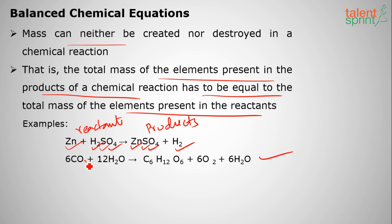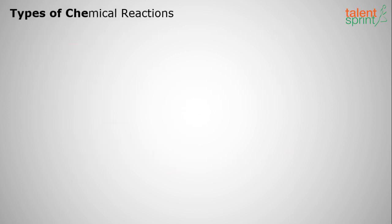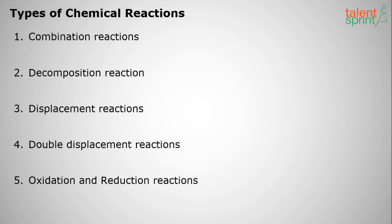A famous balanced chemical equation is for photosynthesis: carbon dioxide reacts with water in the presence of sunlight to form glucose, oxygen, and water — 6CO₂ plus water gives glucose and oxygen. This is one of the famous balanced chemical equations.